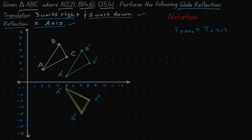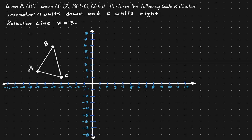Let's take a look at another example. We are given triangle ABC with coordinate points (-7, 2), (-5, 6), and (-4, 1). We want to perform a glide reflection on it using two transformations: first, a translation of four units down and two units to the right, and then a reflection over the line x equals 3.